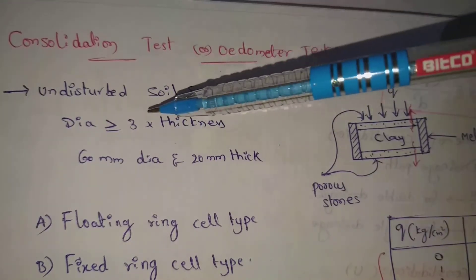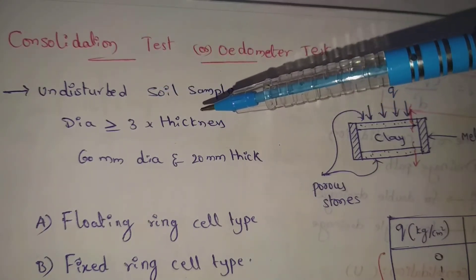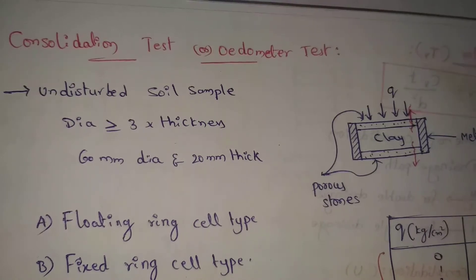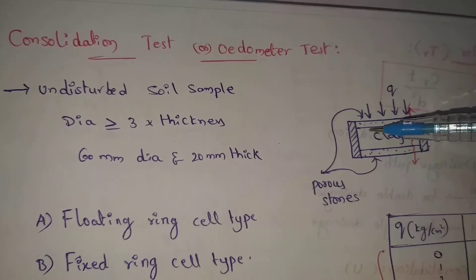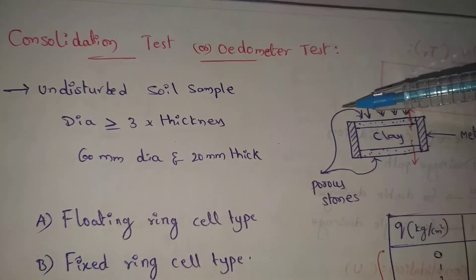So, this soil diameter is greater than or equal to 3 times the thickness. For example, this clay thickness is greater than or equal to 20 mm. This is the diameter.